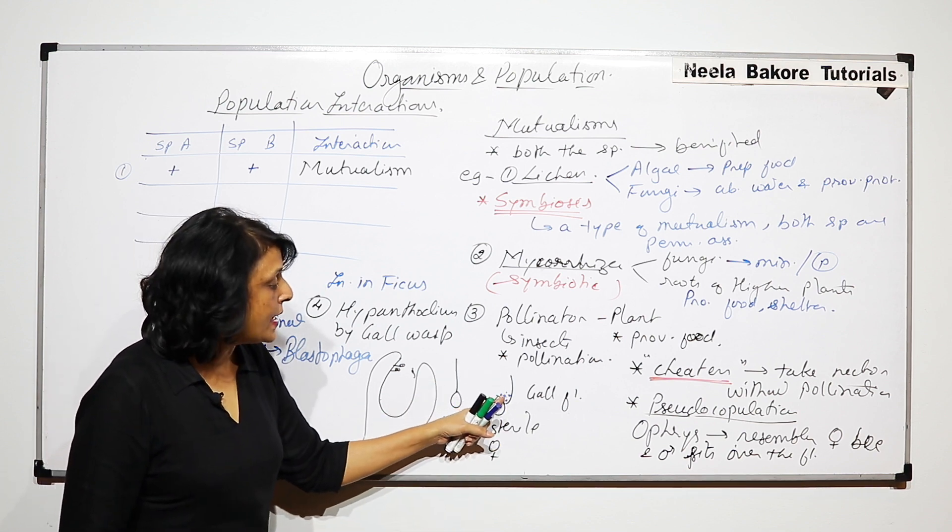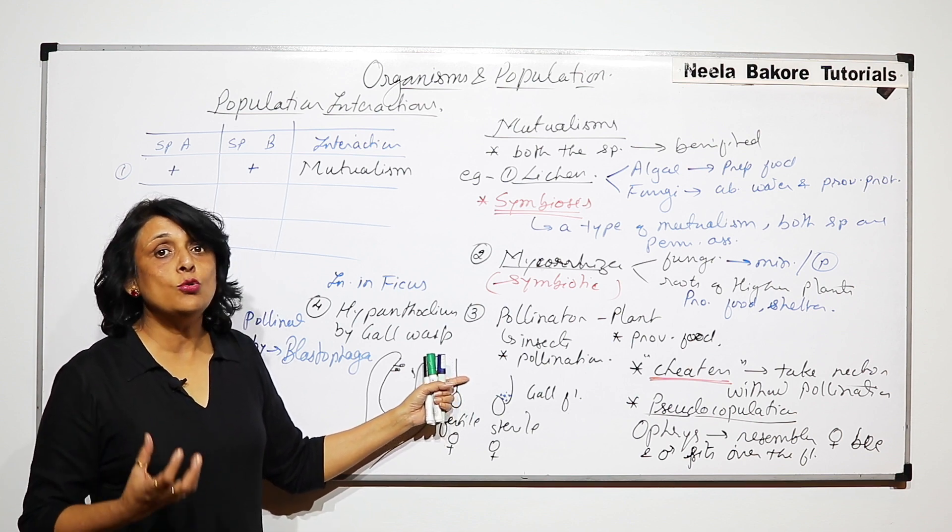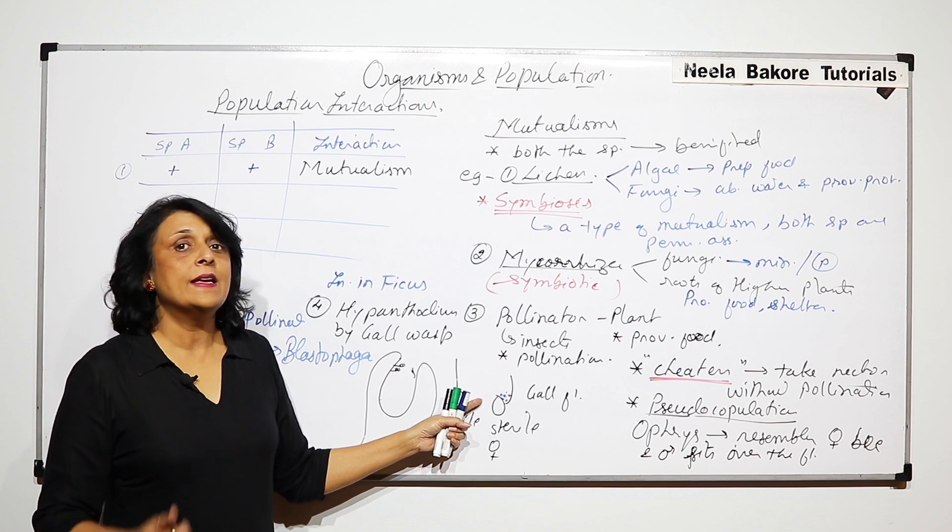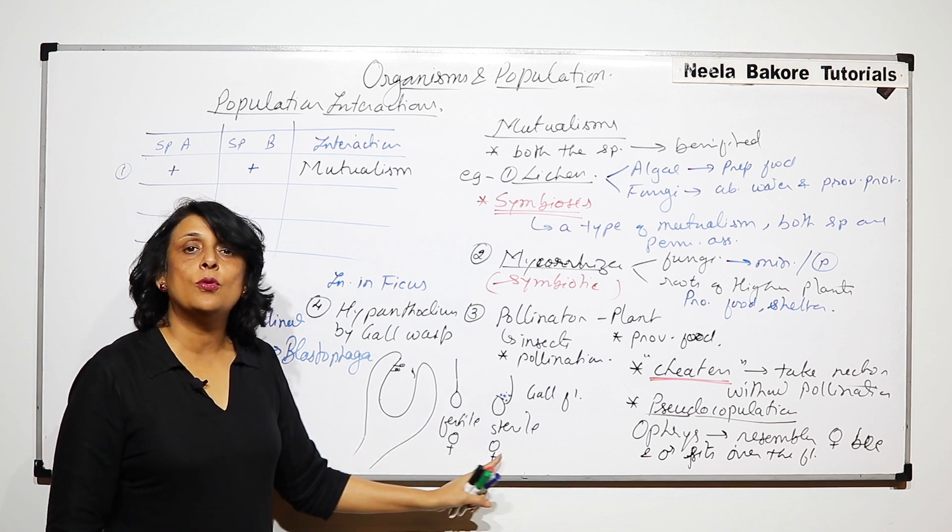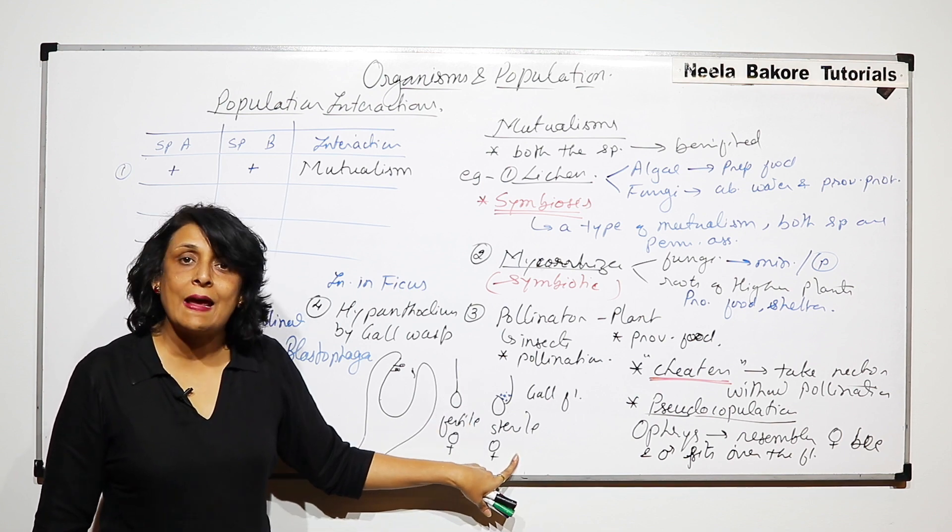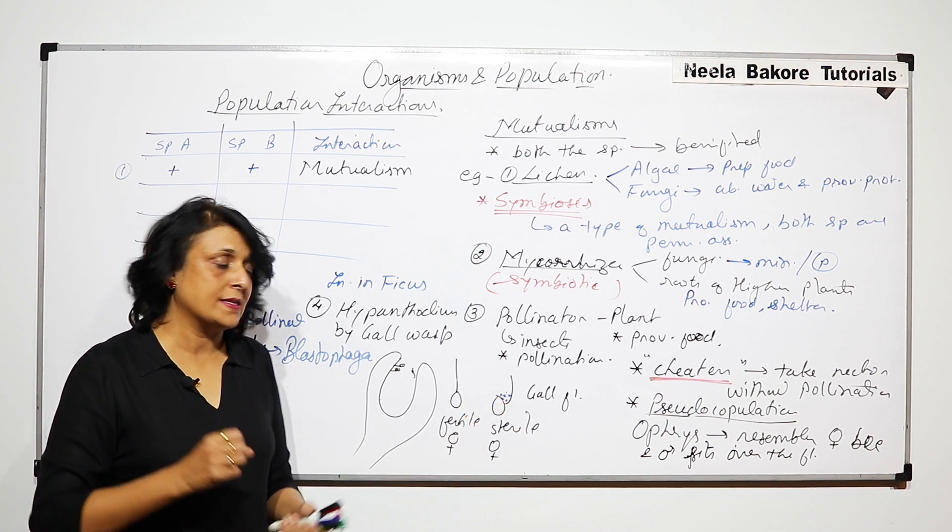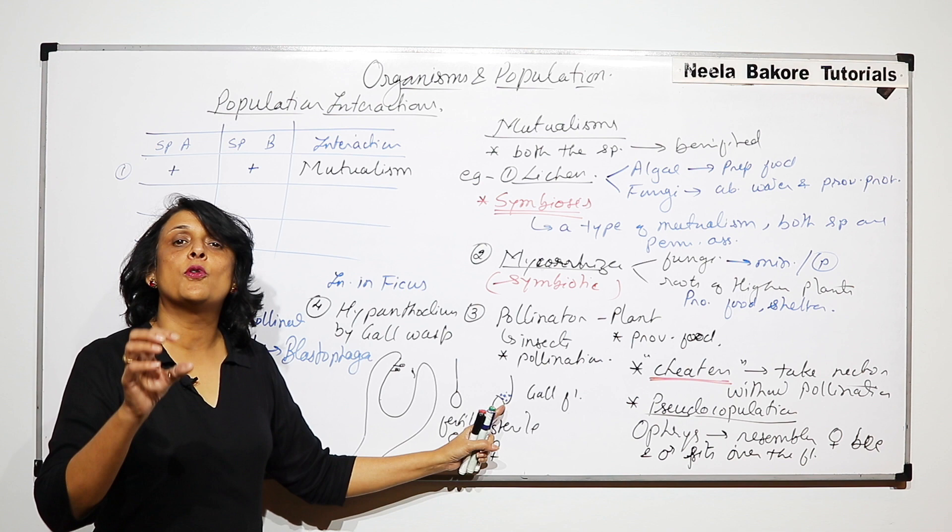And what is the benefit that this insect is going to get? As soon as the larvae hatch from this egg, they need to eat something. So they are going to eat this particular flower. There is no harm to the Hypanthodium because this flower is anyway sterile. But the larvae is going to get instant food plus it is going to remain in this protected position.